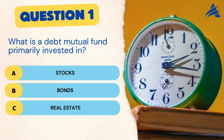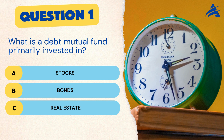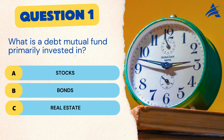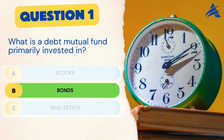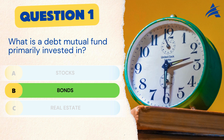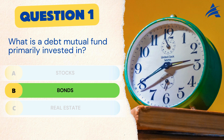Question 1. What is a debt mutual fund primarily invested in? A. Stocks. B. Bonds. C. Real estate. The correct answer is B. Bonds. Bonds are the cornerstone of debt mutual funds, offering stability and income potential for investors seeking reliable returns.